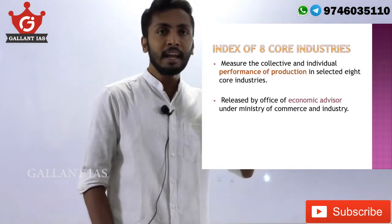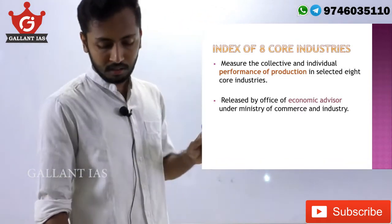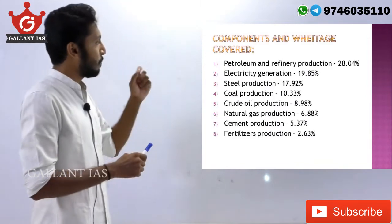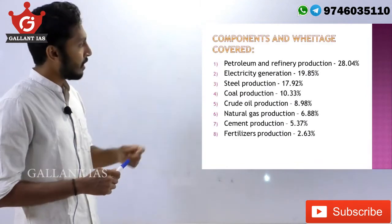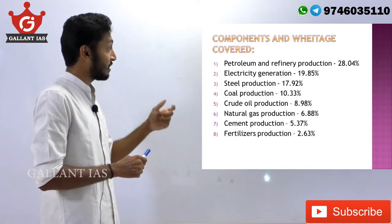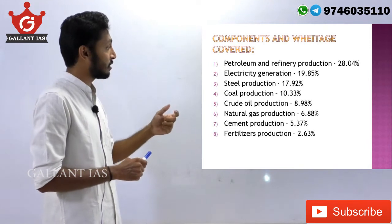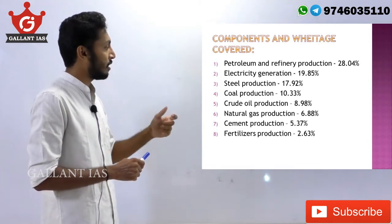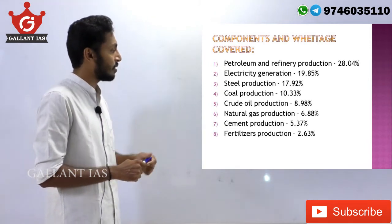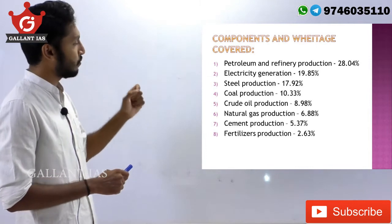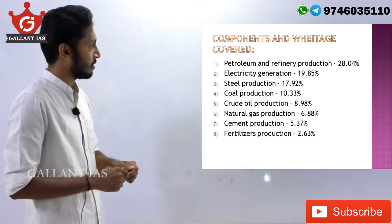Which are these 8 core industries? They are: petroleum and refinery production, electricity generation, steel production, coal industry, crude oil industry, natural gas industry, cement industry, and fertilizers industry.